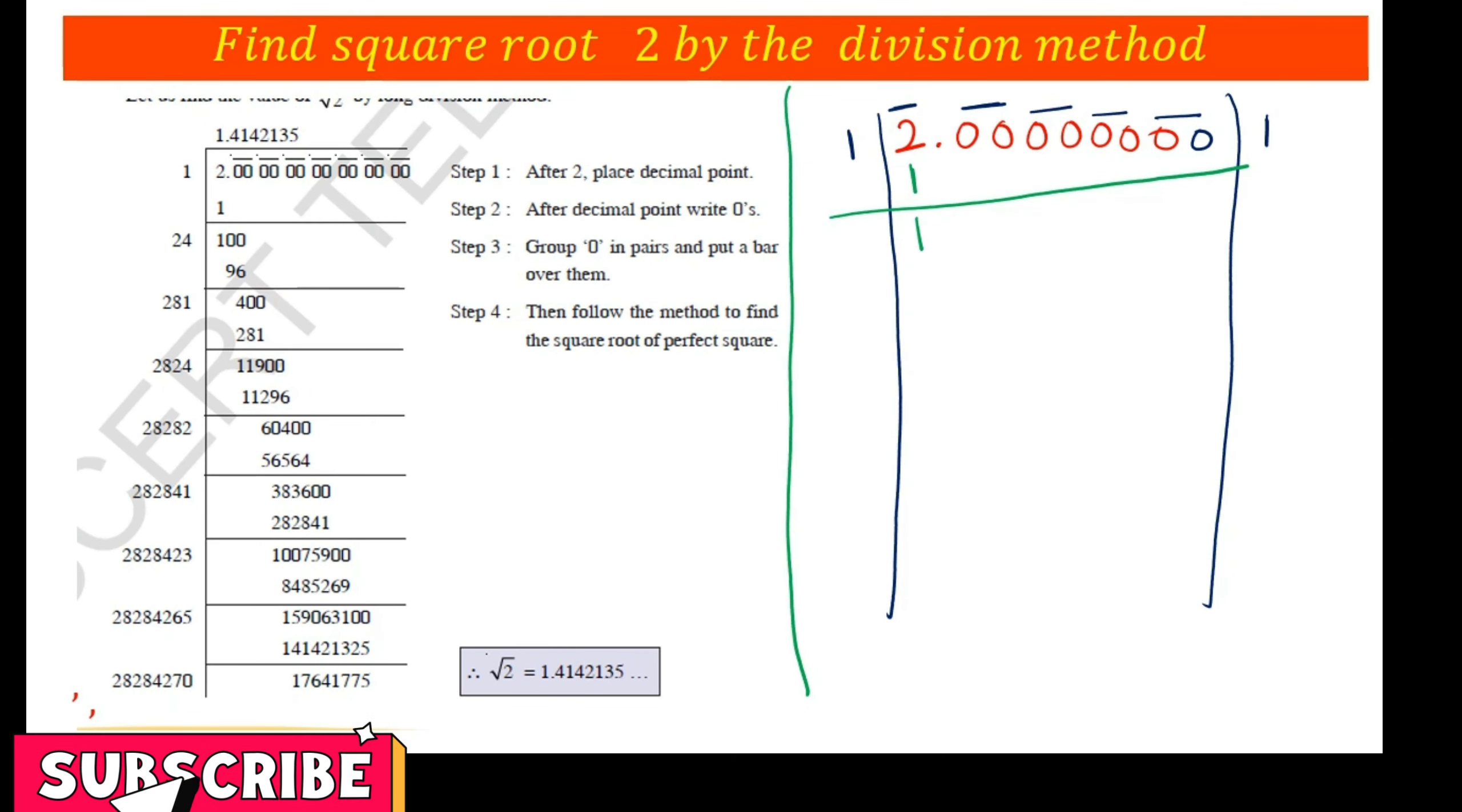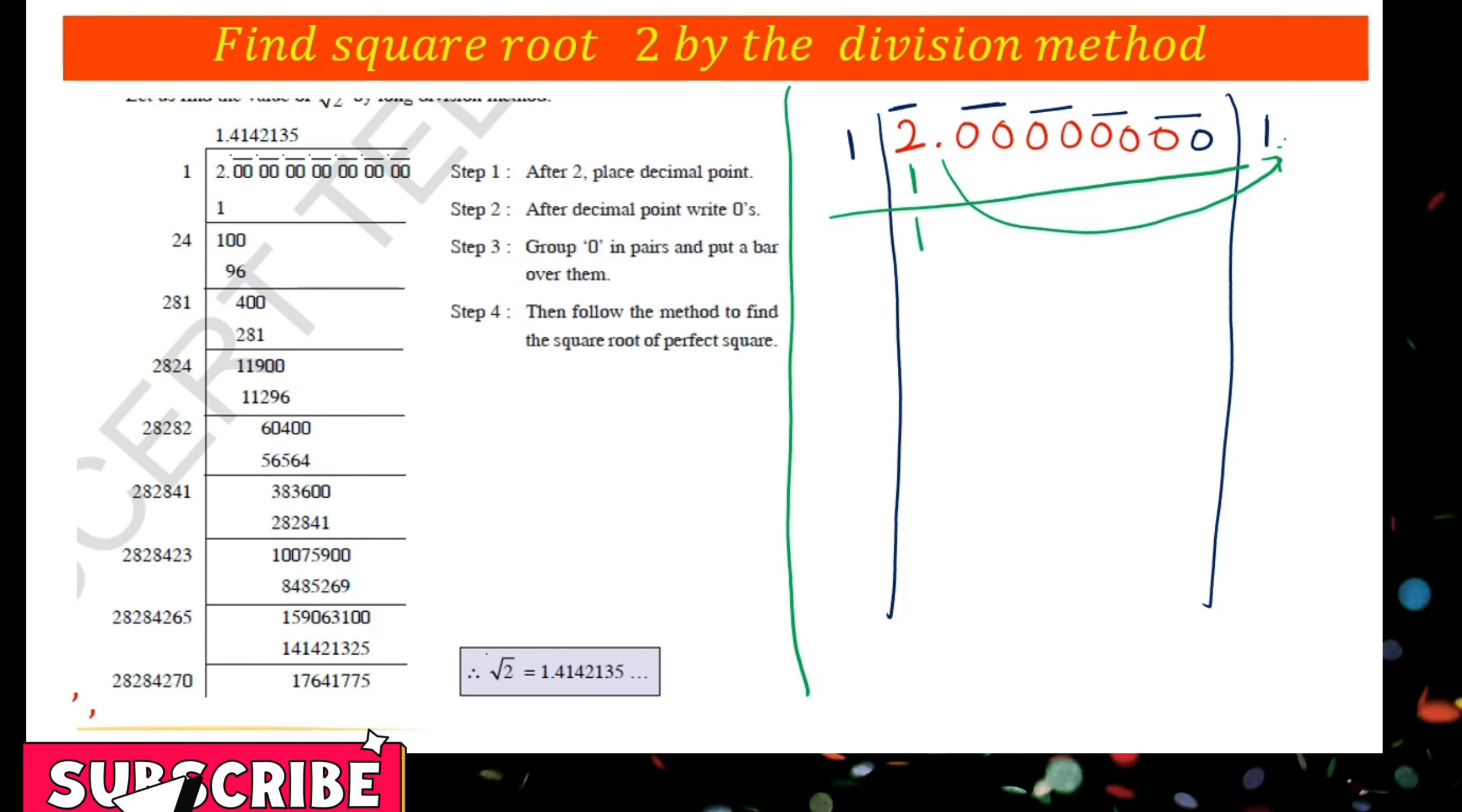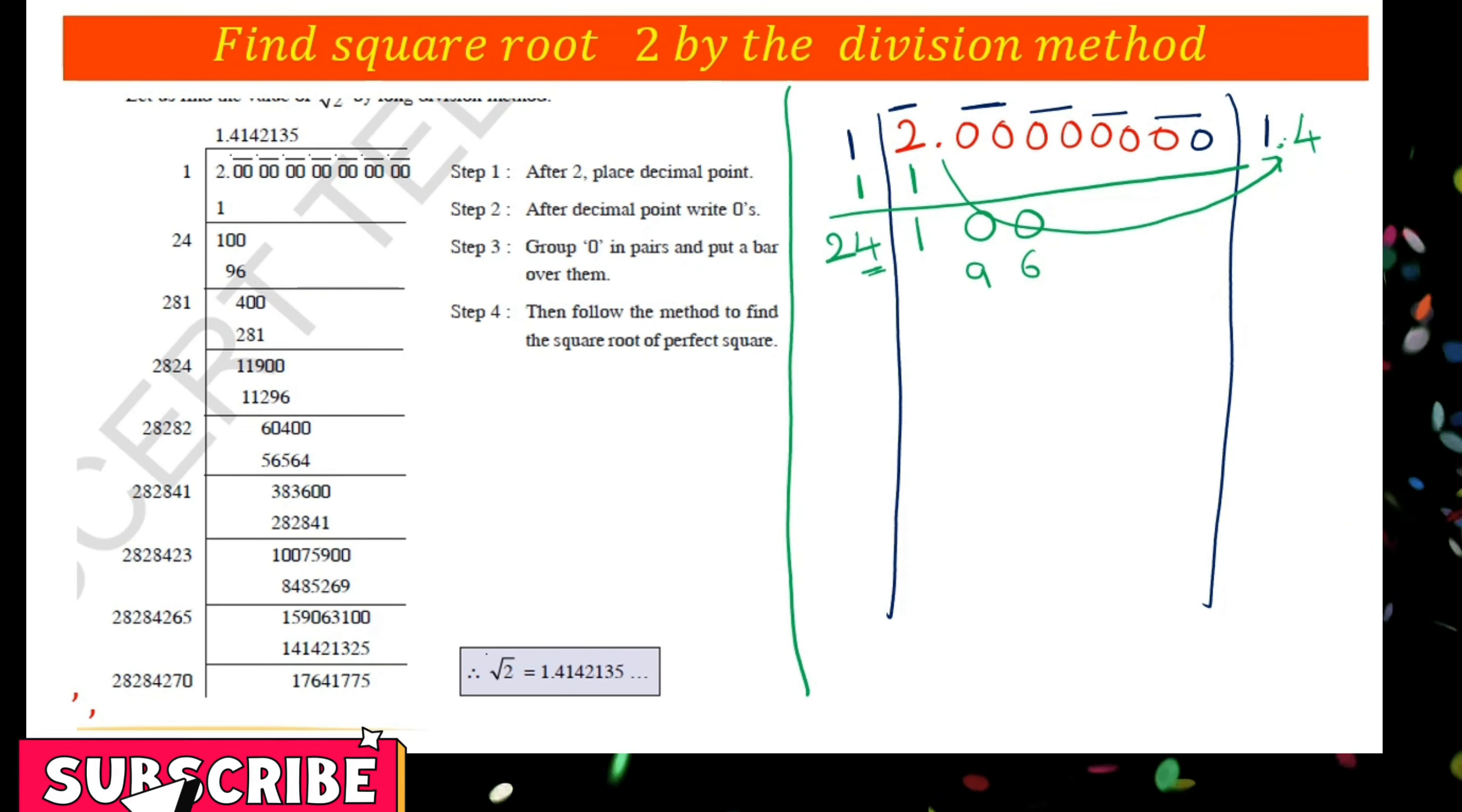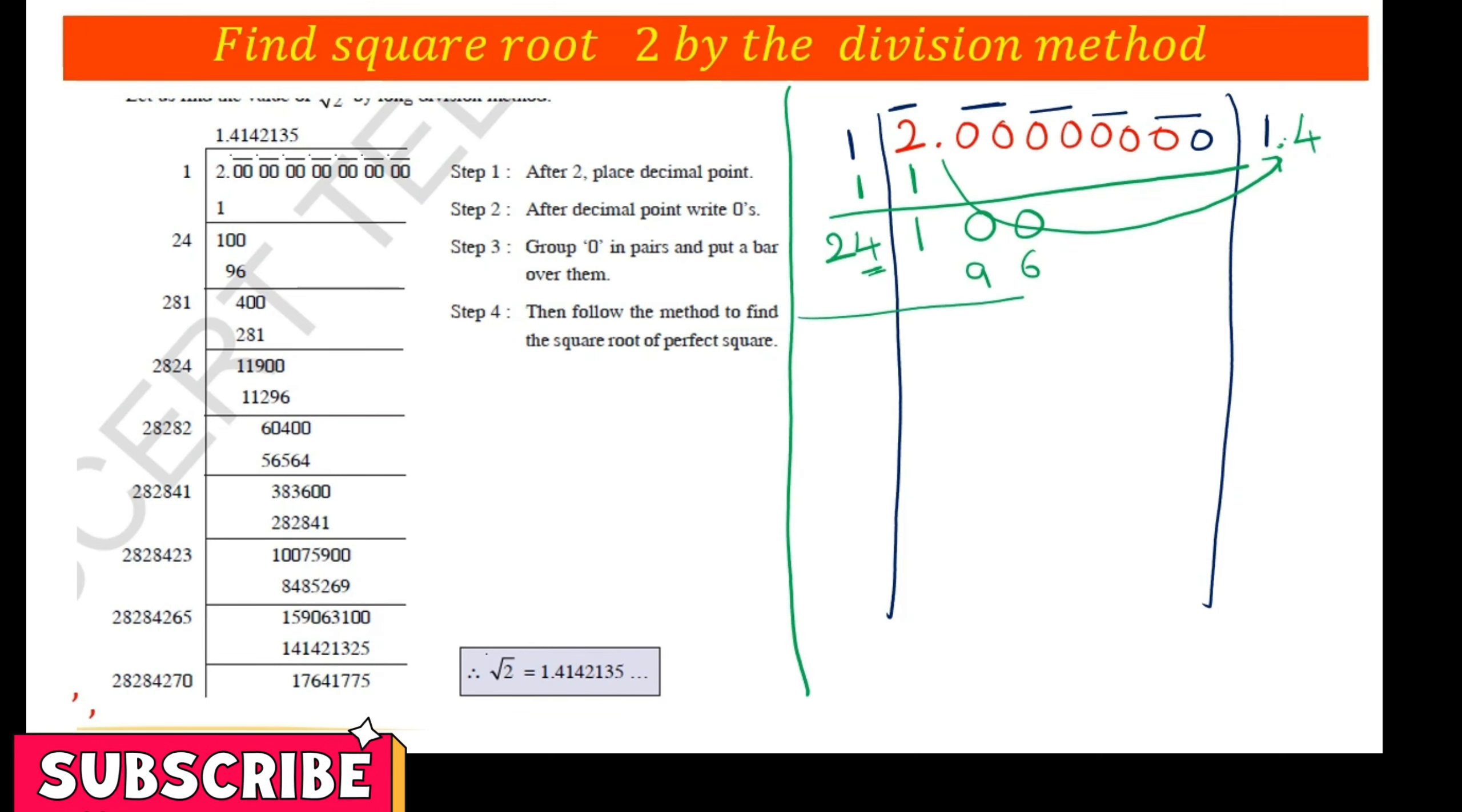Put the point in the quotient part. Add the same number: 1 plus 1 equals 2. Bring down 00 to get 100. 24 times 4 equals 96. So the second digit in the quotient is 4. The divisor also takes the same digit, 4. Subtract 96 from 100 to get 4.